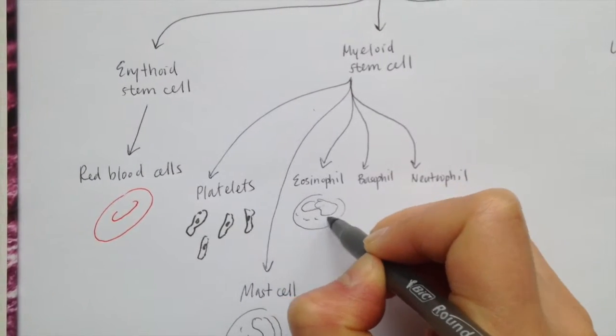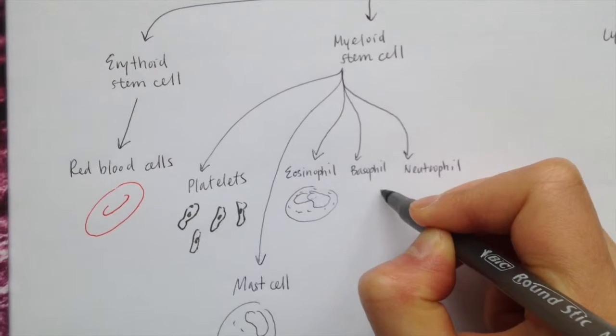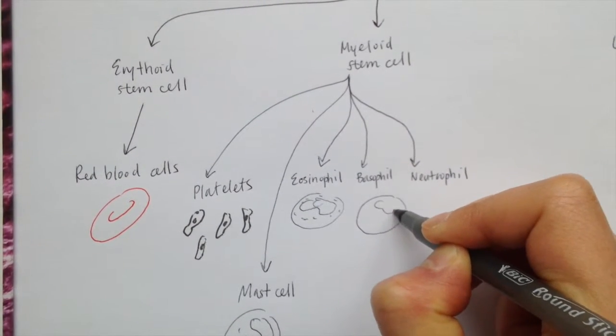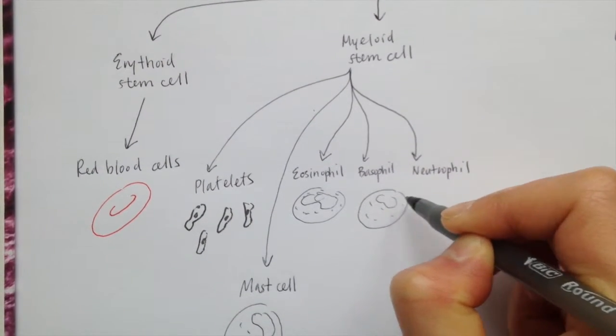Basophils are also phagocytic cells that contain histamine and other things similar to mast cells. They tend to reside in tissues and do not circulate through the blood.